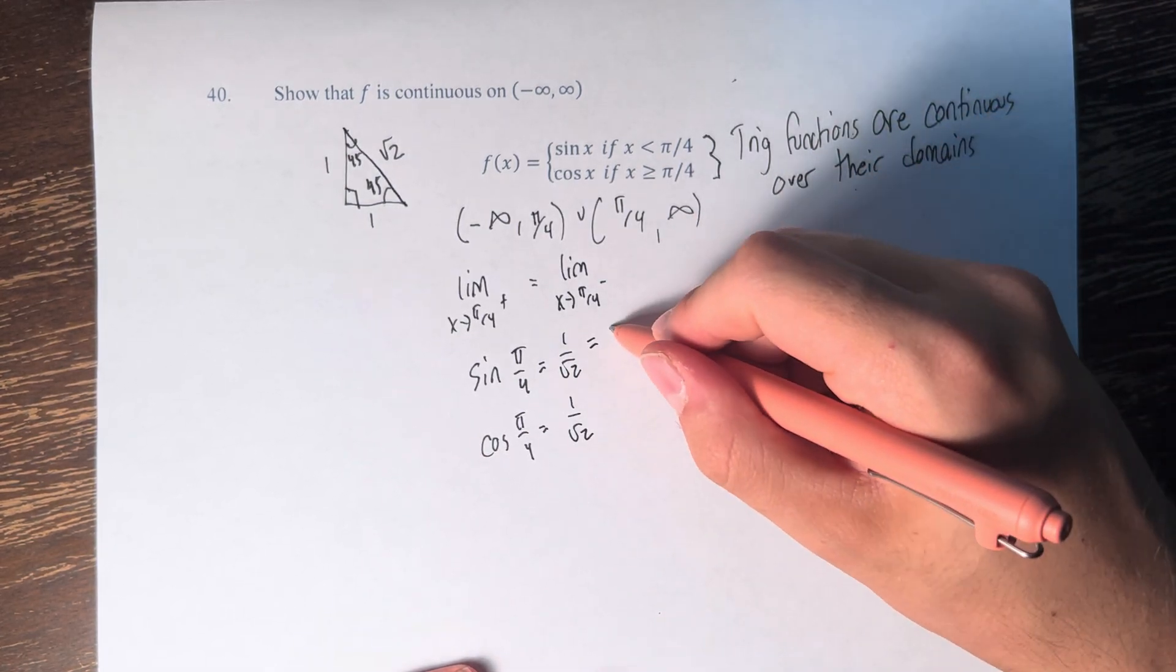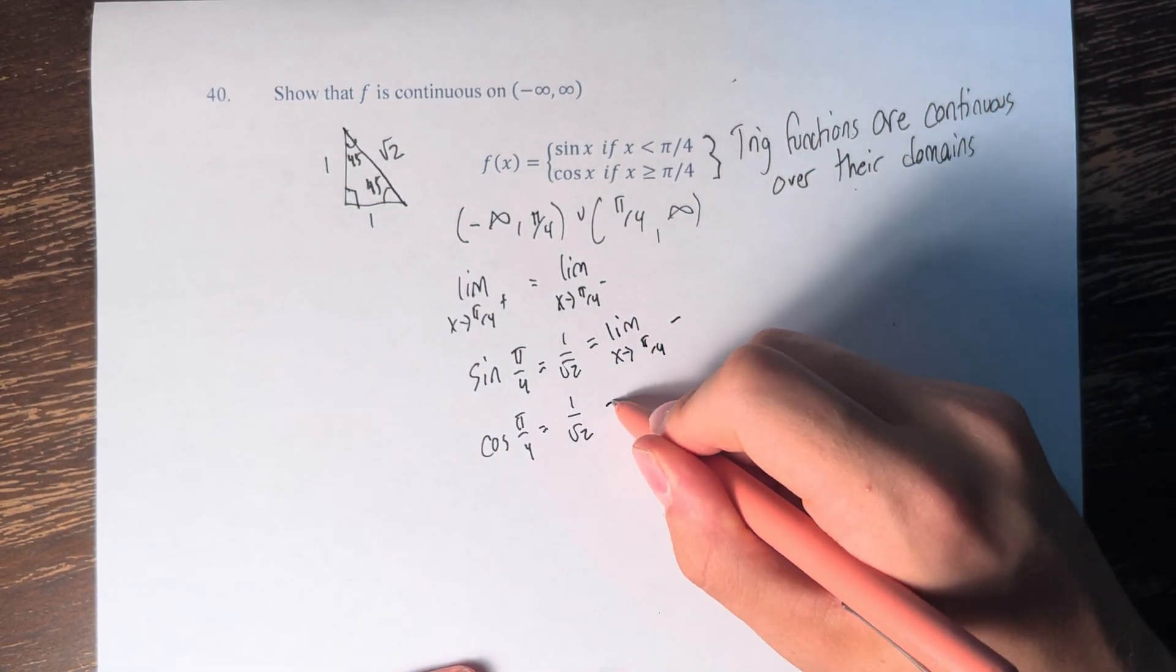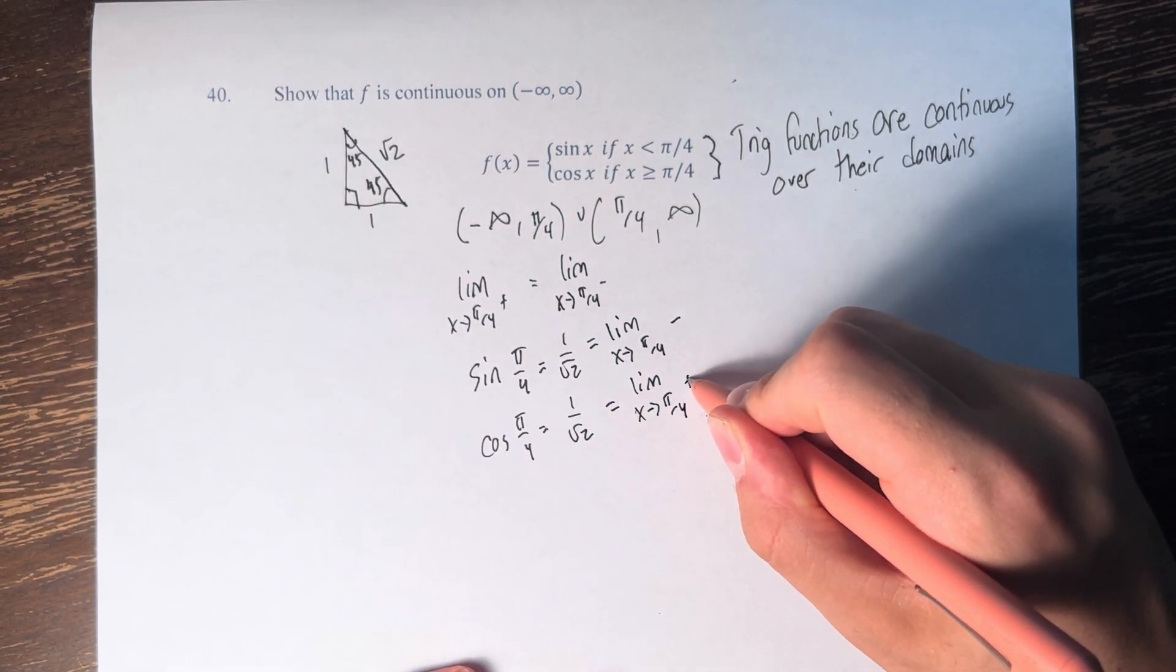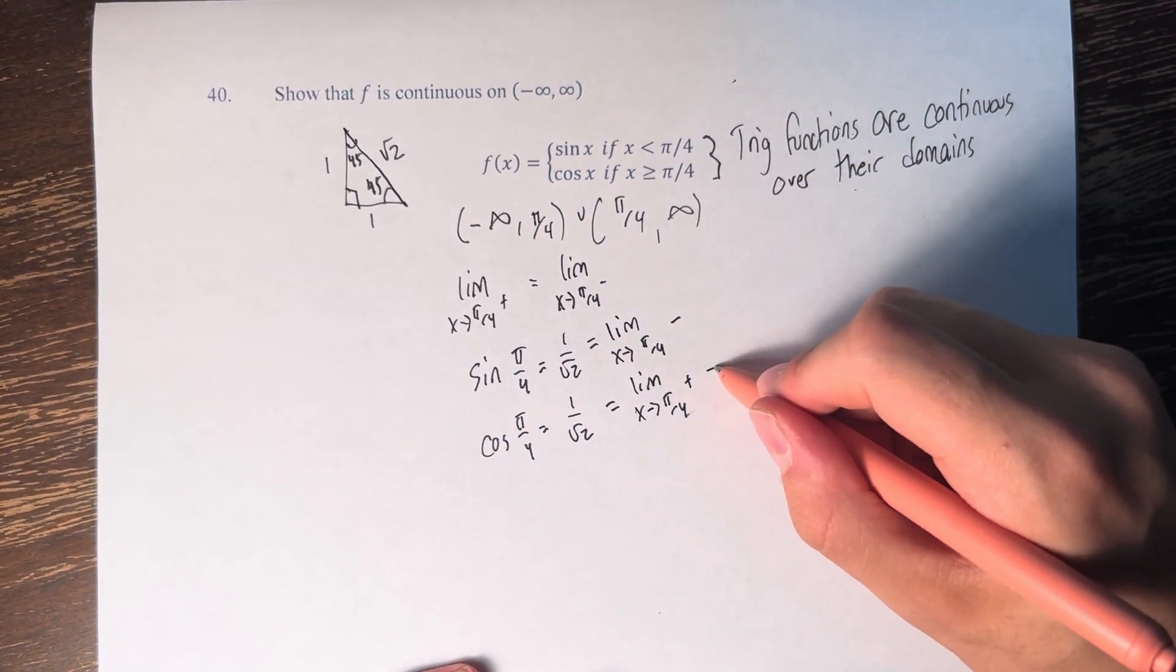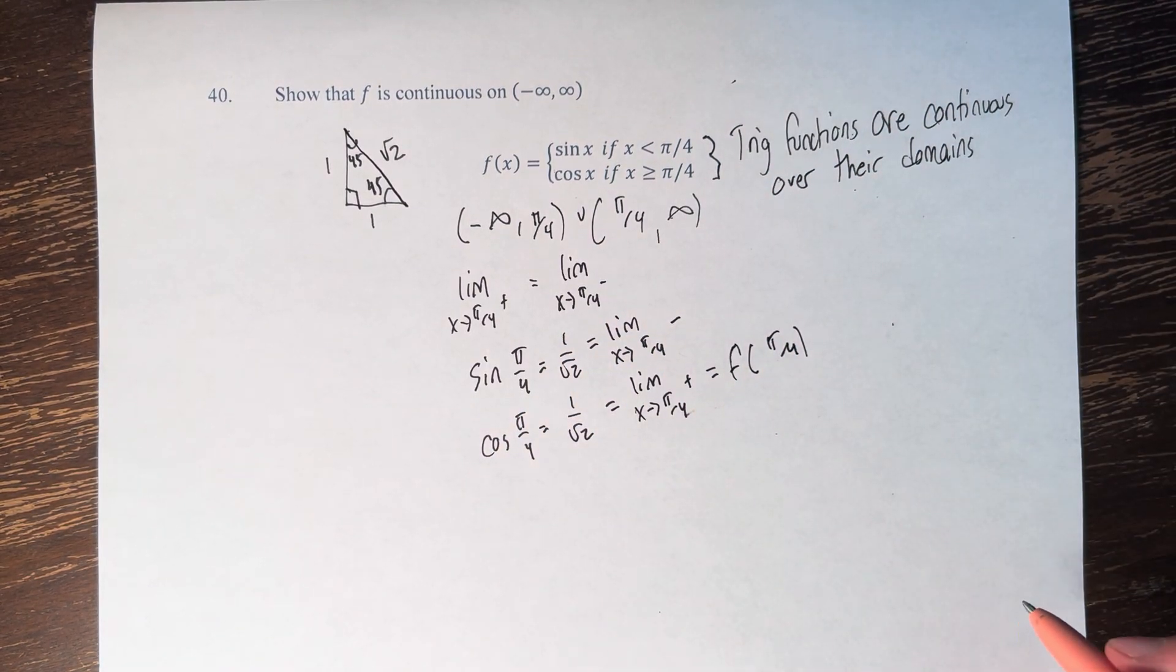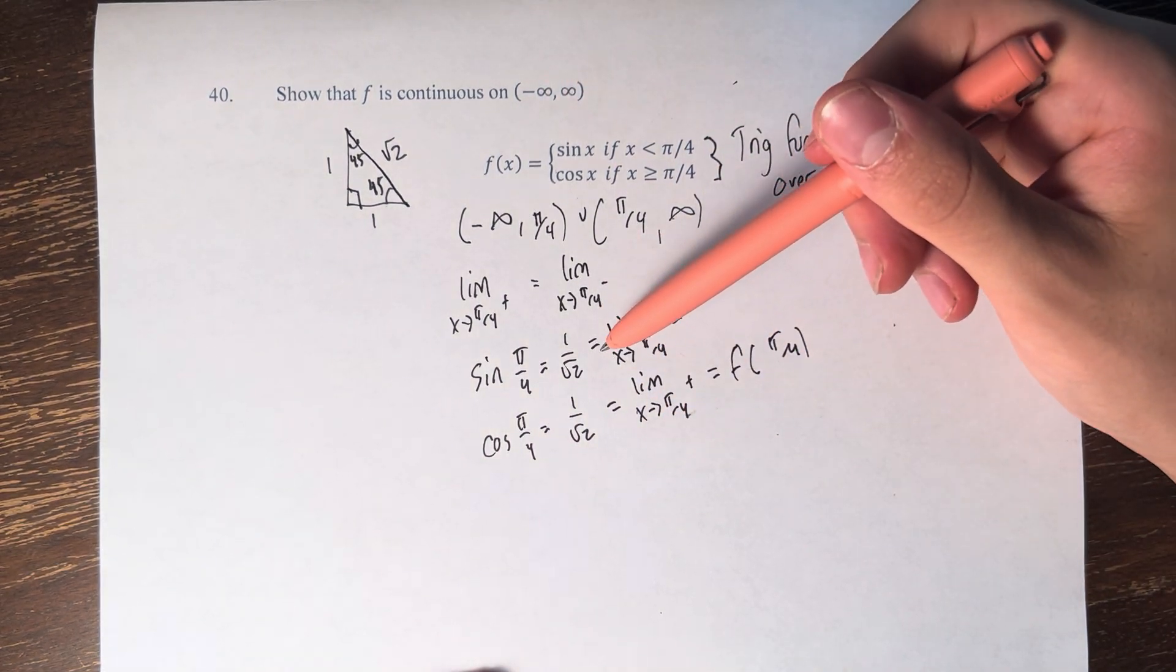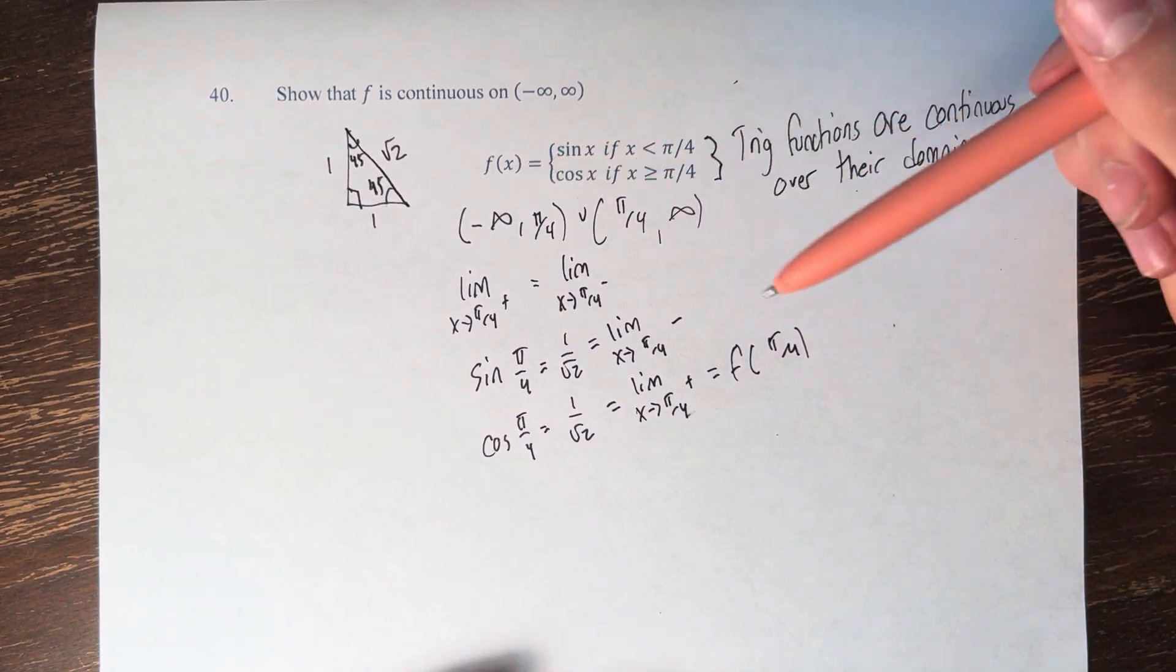And this equals the limit as x approaches pi over 4 from the left. This equals the limit as x approaches pi over 4 from the right. And since it's equal to cosine of x at pi over 4, it's also equal to f of pi over 4. Therefore the limit as x approaches pi over 4 equals f of pi over 4, so it's continuous at pi over 4.